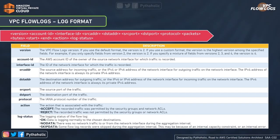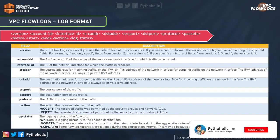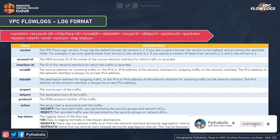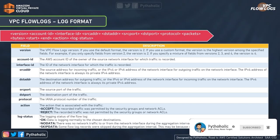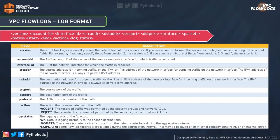The next field is account ID — the AWS account ID of the owner of the source network interface for which the traffic is recorded. The interface ID field records the ID of every network interface as part of the traffic log. Source address (srcaddr) is the source address for incoming traffic, which will be your private IPv4 address. The destination address (dstaddr) is the destination address for outgoing traffic, also a private IPv4 address. Source port and destination port are also recorded.